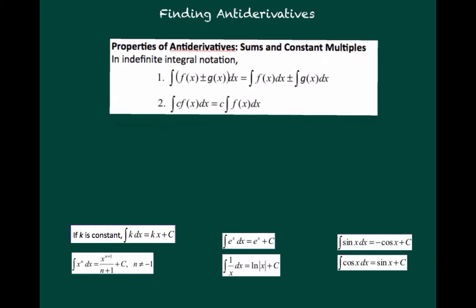Before we start that, let's remind ourselves of some of the properties that we learned in the last section: that the sum or difference of the integral of two functions is just equal to the sum of each integral. Sometimes that's helpful if one of the parts of the sum is easy to integrate and the other one's not. The second is that if you have a constant like c, you can take that constant out and place it outside of the integral, and sometimes that makes it easier to integrate.